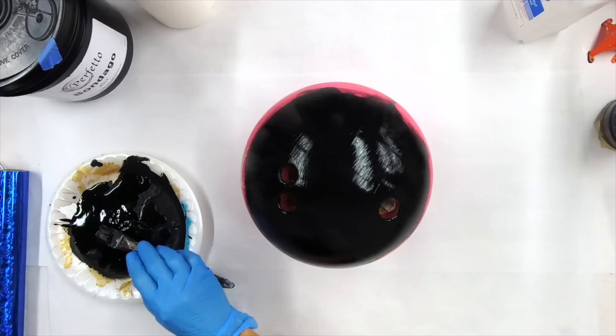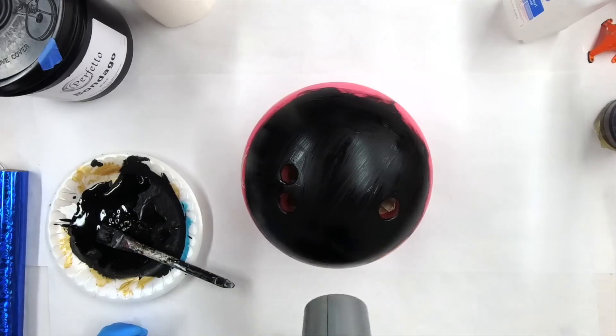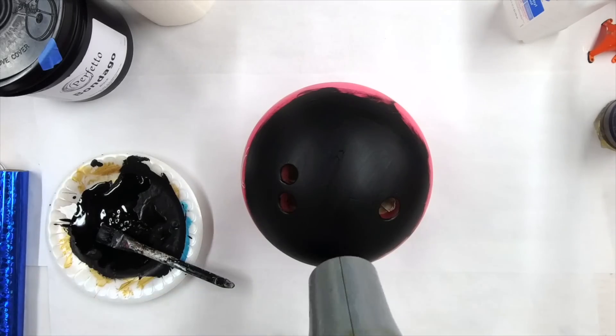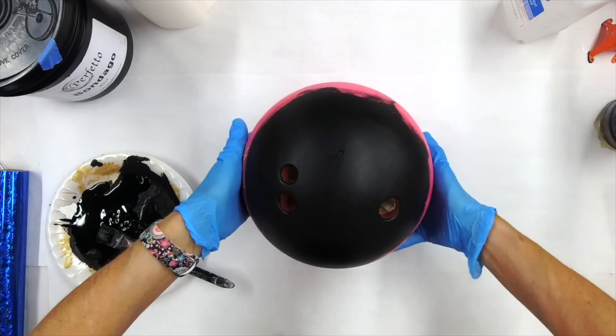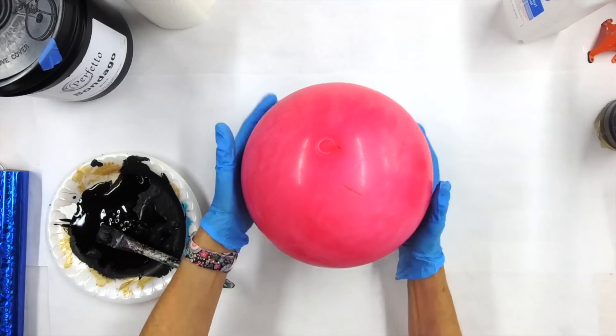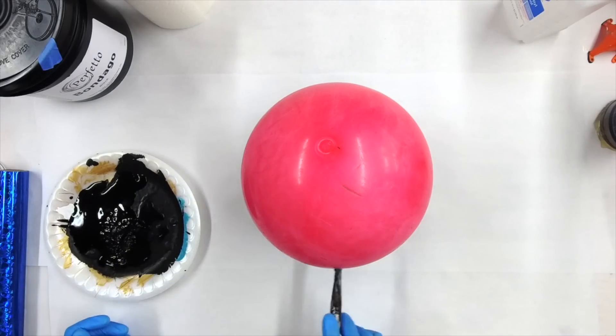So we'll blow dry it real quick. And now we're going to flip this over and try to get that straight down so now that we can paint the whole rest of the bowling ball.